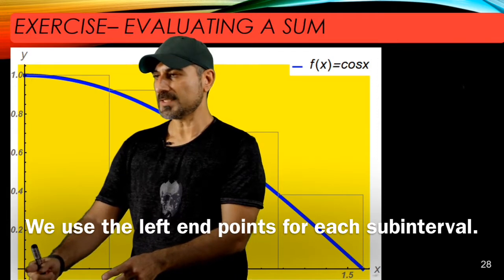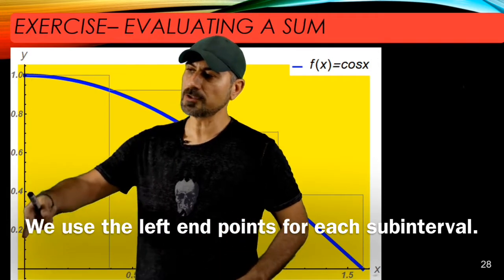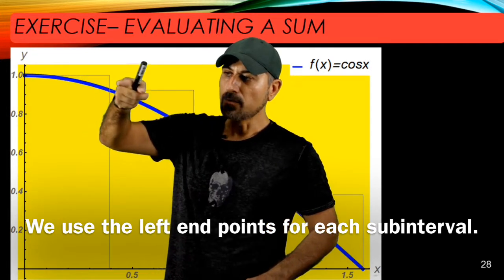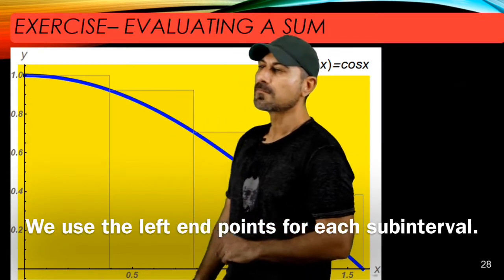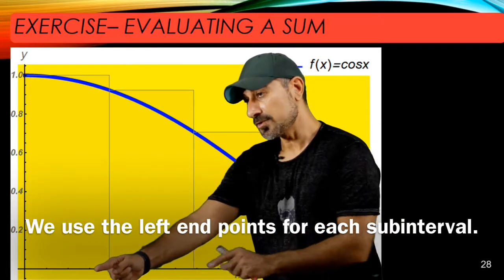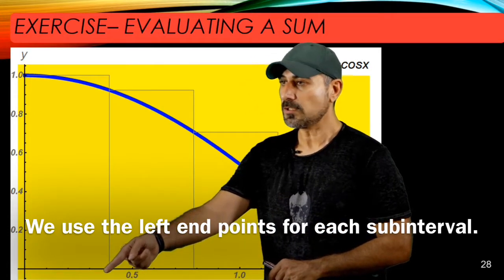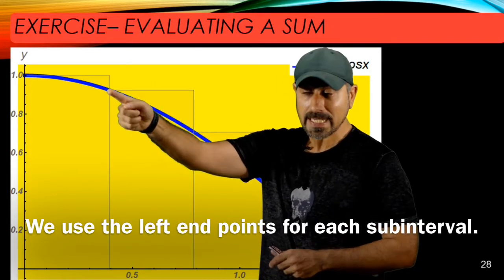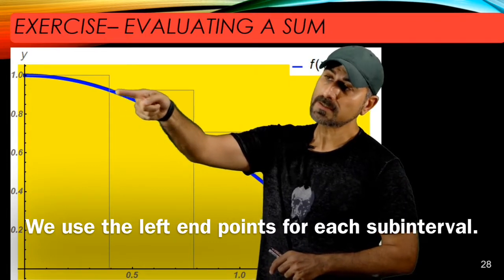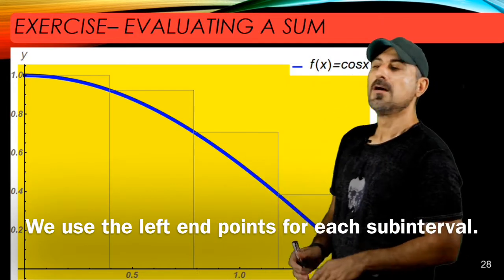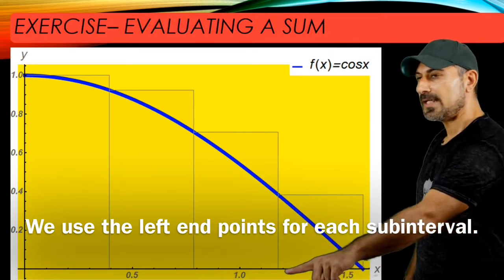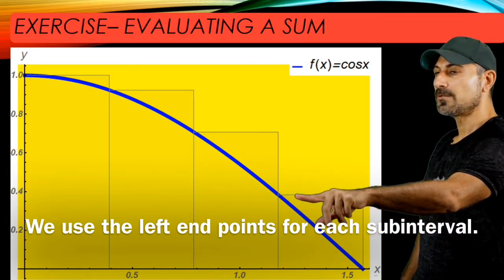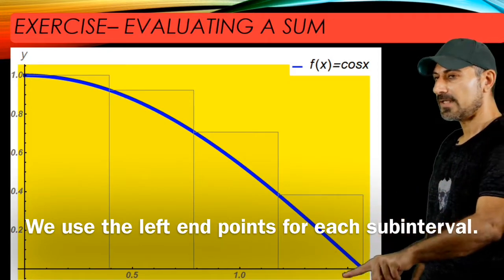For example, for the first subinterval, the left-end side is at x equals zero. The function value is all the way one, so I'm going to make a rectangle of height one with the base exactly that subinterval. For the next subinterval, I use the left end to construct my rectangle. At that point the function takes the corresponding value, and my rectangle comes with that height and base. For the last subinterval, if you use the left endpoint, the function value gives the rectangle its height, and the base is that subinterval.